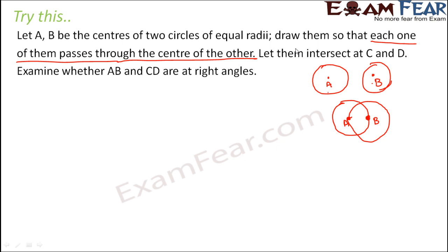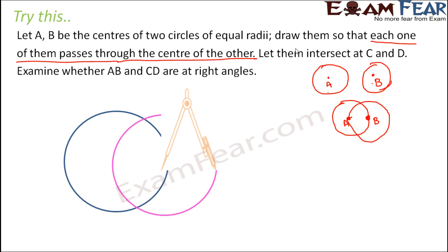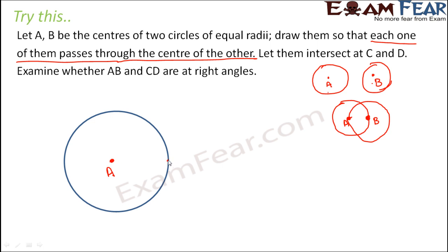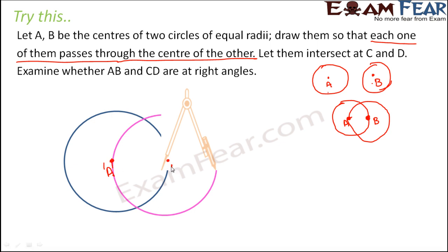So here's how to do this construction: draw the first circle with any convenient radius and mark its center A. For the second circle, consider a point on the first circle to be the center B of the second circle. Place the tip of your compass somewhere on the first circle and draw another circle with the same radius. You will find that this second circle passes through point A. In this fashion you can complete the construction.